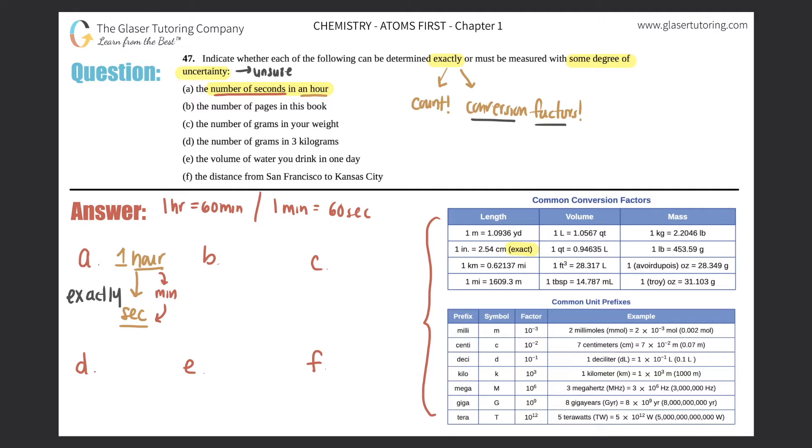B, the number of pages in this book. We're using the OpenStax textbook online, but if you literally had the physical copy, would you be able to find out how many pages are in the book? Of course you could, all you got to do is just go to the back and see what the last page number is. Did you count it, use a conversion factor, or are you unsure? Yeah, all you got to do is count, so this is also an exact measurement.